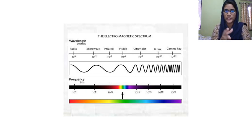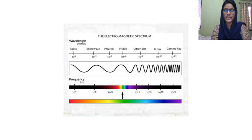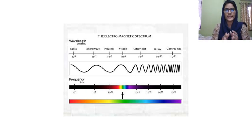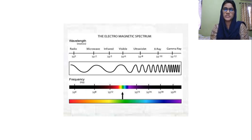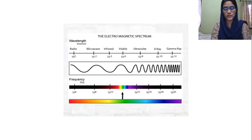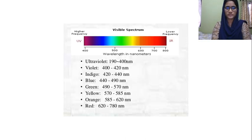We can arrange the wavelength regions accordingly: radio waves, microwaves, IR, visible, and UV. These are the different wavelength regions.